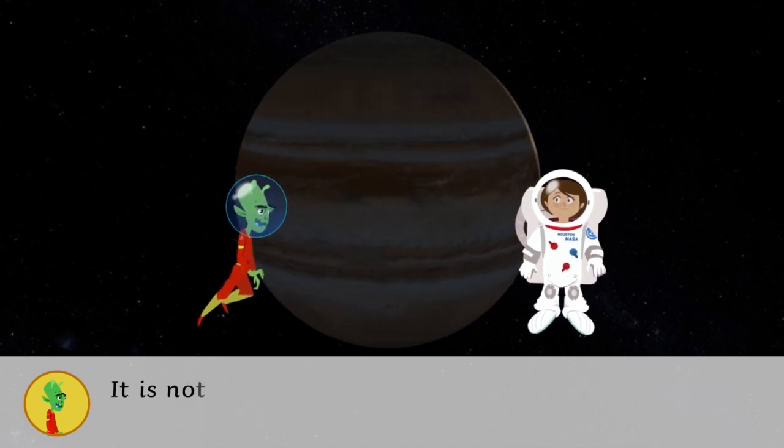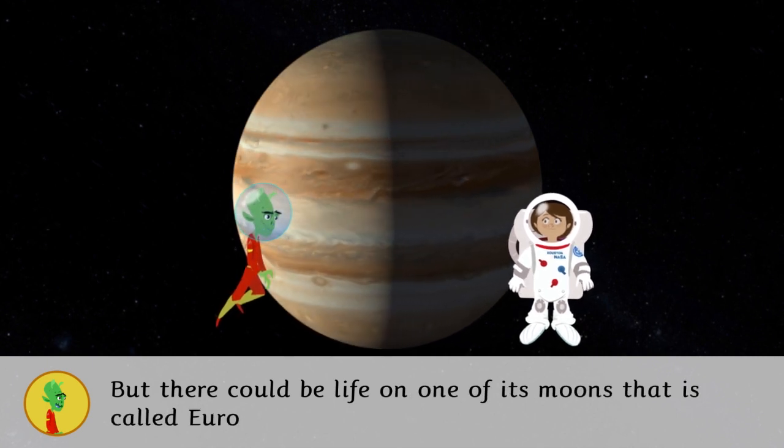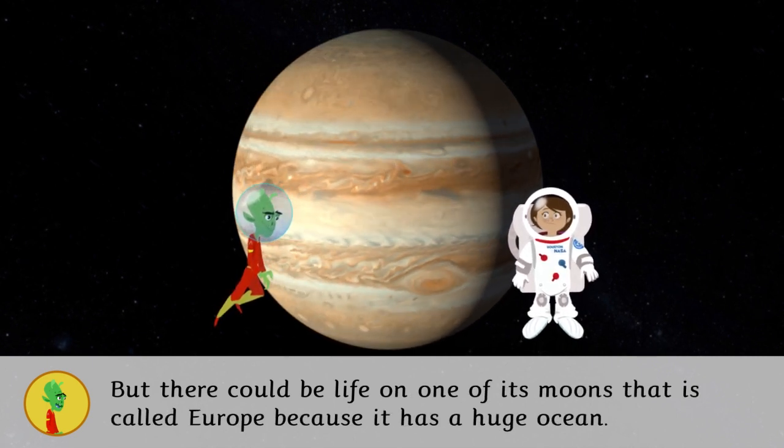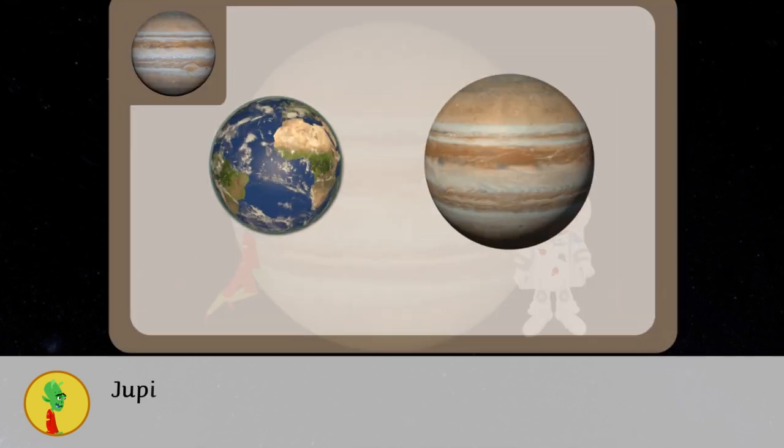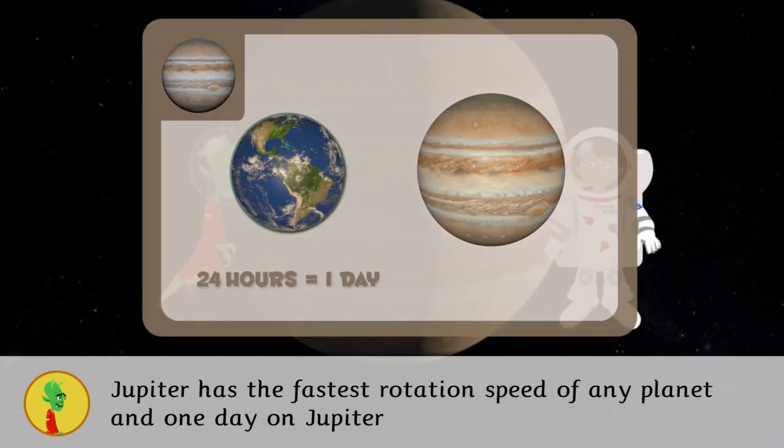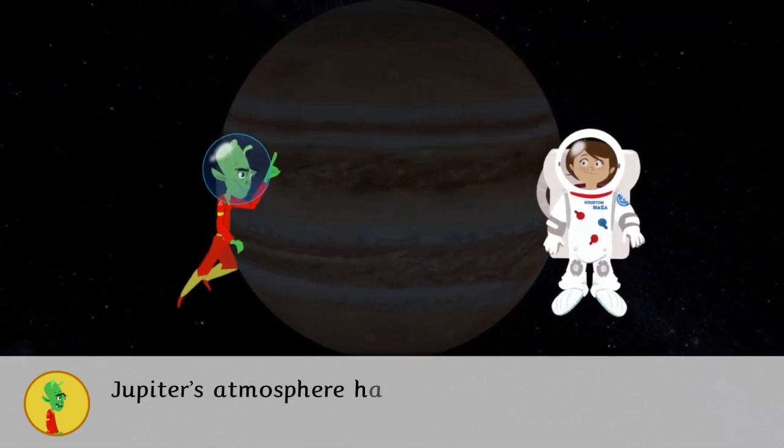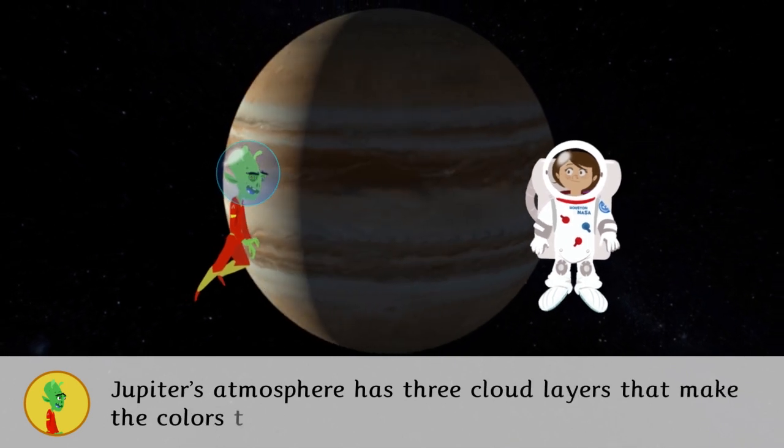It is not possible for life on Jupiter, but there could be life on one of its moons that is called Europe because it has a huge ocean. Jupiter has the fastest rotation speed of any planet and one day on Jupiter is only 10 hours on Earth. Jupiter's atmosphere has three cloud layers that make the colors that we see.